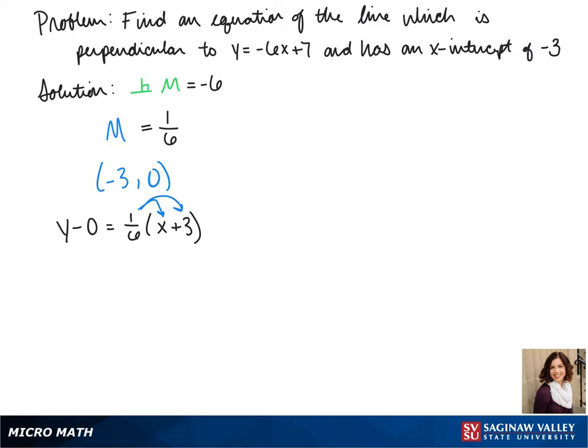We distribute our 1 sixth to both terms and we get y equals 1 sixth x plus 1 half. So this is our line in slope intercept form.